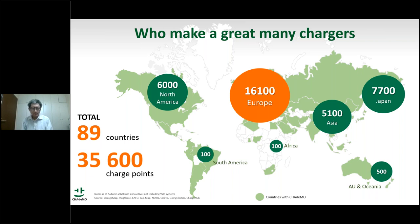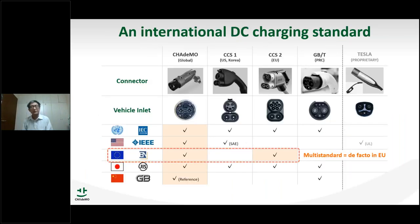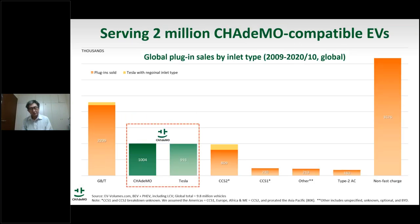As you may know, we have many internationally defined standards in IEC and IEEE. From the viewpoint of global distribution and numbers, CHAdeMO is one of the most successful. This slide is about electric vehicle numbers by charging system — CHAdeMO is actually one-third of the world excluding the Chinese market. And if you include Tesla as CHAdeMO-compatible, then two-thirds of the global electric vehicle market, excluding China, is CHAdeMO compatible.